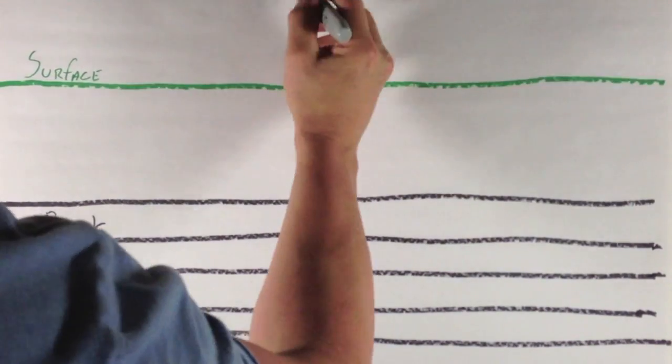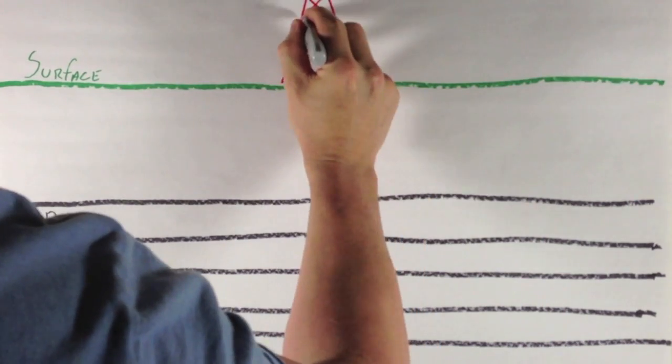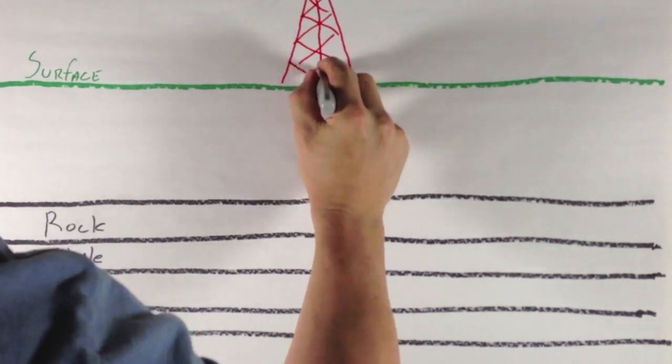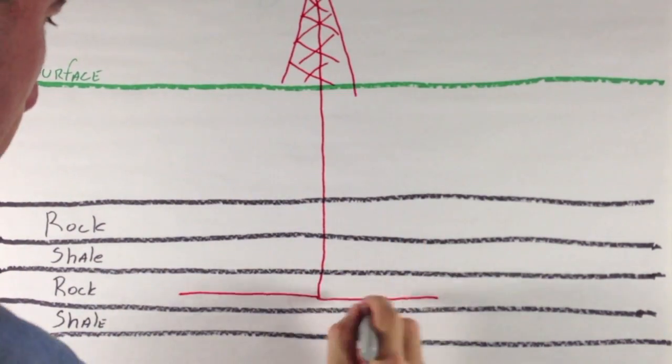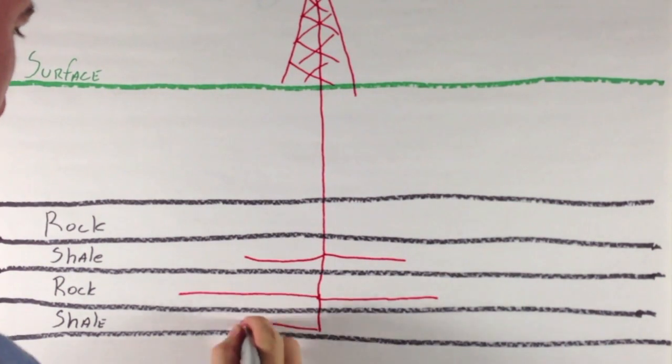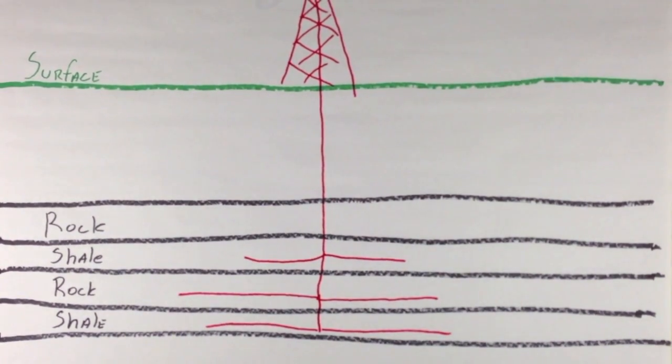Fast forward to today and horizontal fracking, they build one well site on the surface and they drill one vertical shaft, but then they drill horizontal shafts and they frack the rock. This is more productive than the old way and it looks much better. Hopefully this will help you understand better what horizontal fracking is.